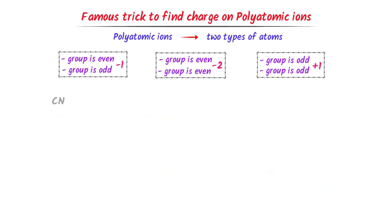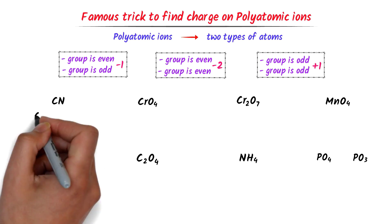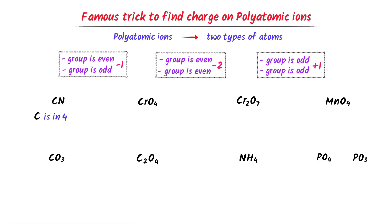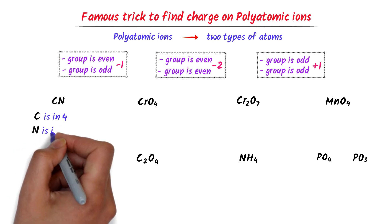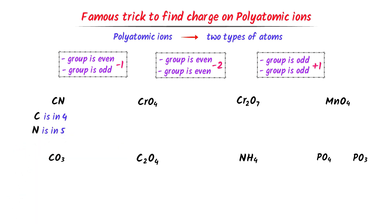Now consider these more difficult polyatomic ions. In the case of cyanide ion, carbon is in the 4th group and nitrogen is in the 5th group. Four is an even number and 5 is an odd number. According to the rule, the charge must be negative 1. Hence, the charge on cyanide ion is negative 1.